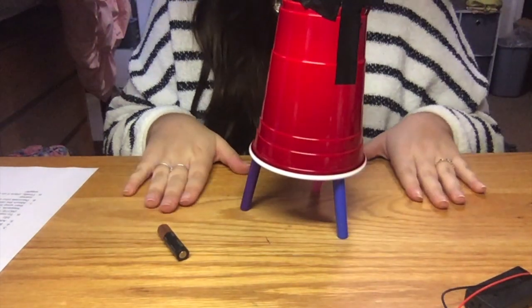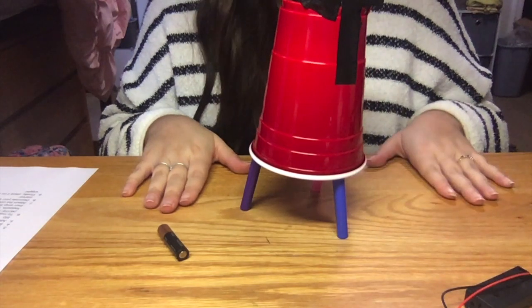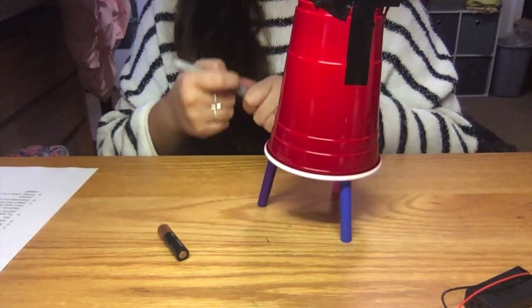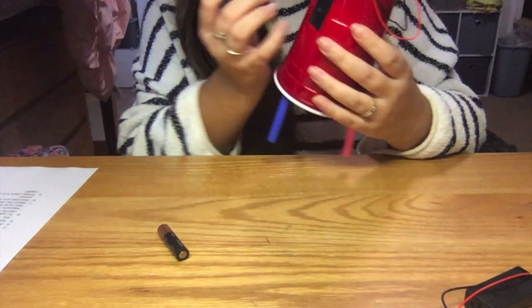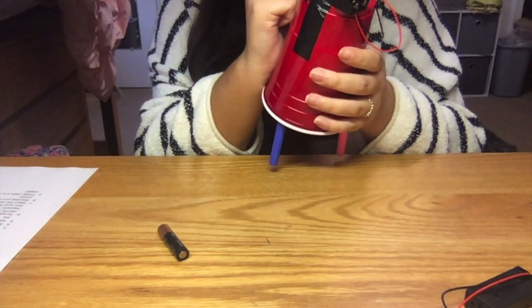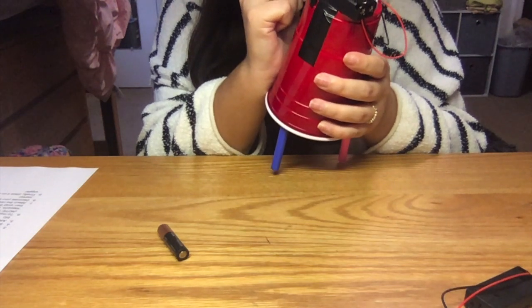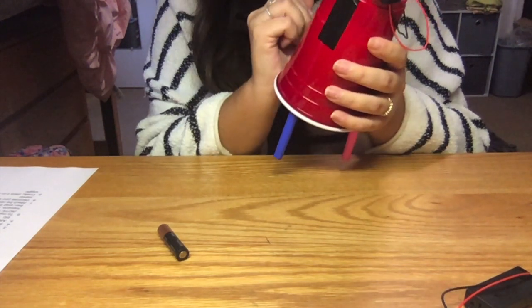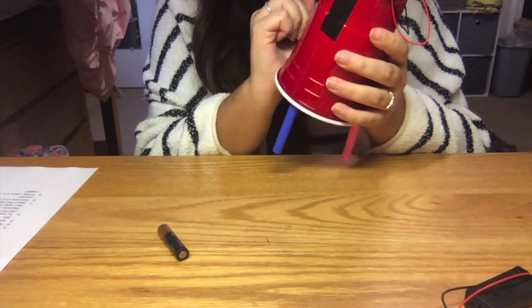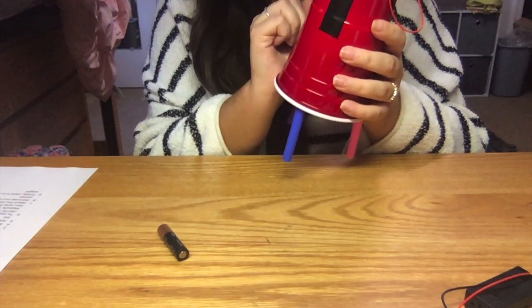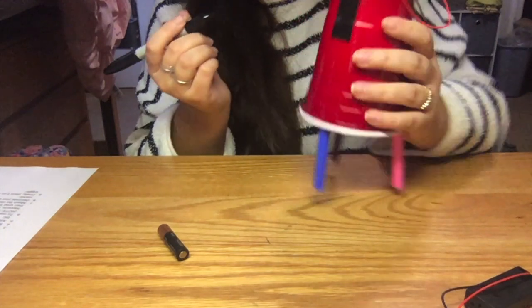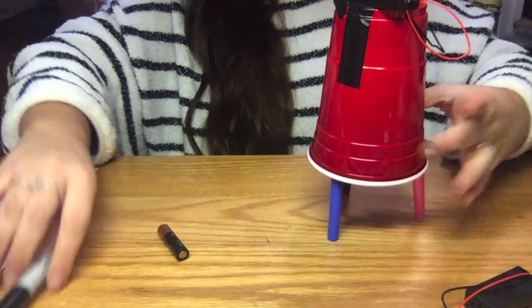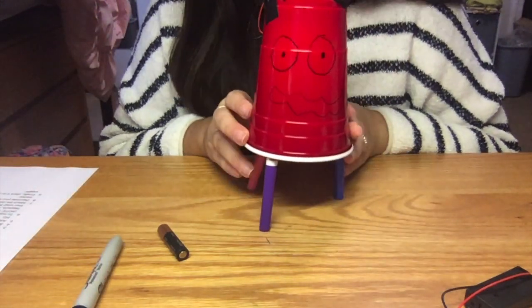And then this last step is the fun part where you get to decorate your robot. I don't have googly eyes, so I'm just going to use a permanent marker. You guys can make it look however you want. You can decorate it with stickers or honestly anything. So I just gave my guy a little face.